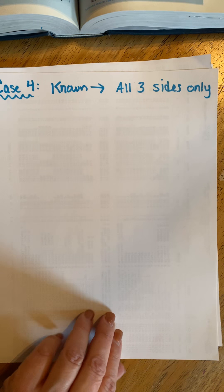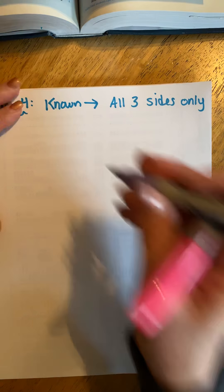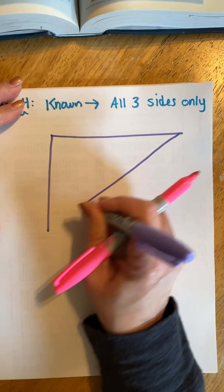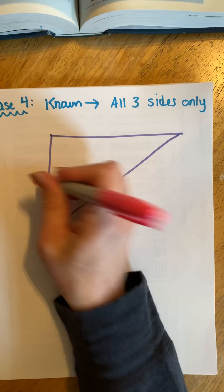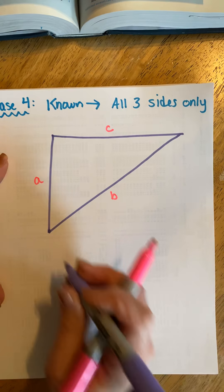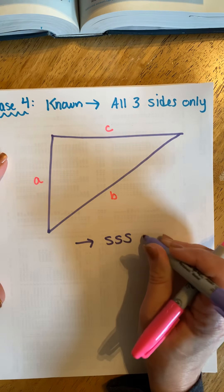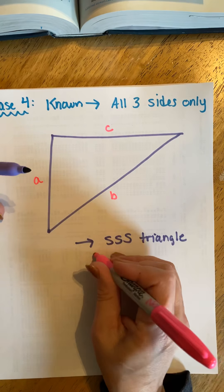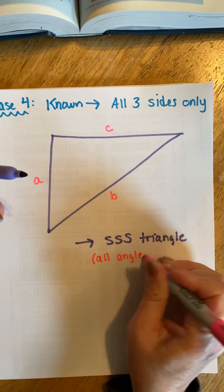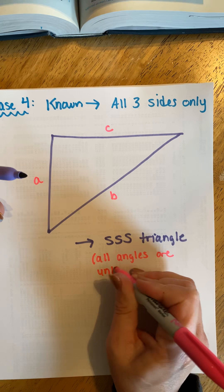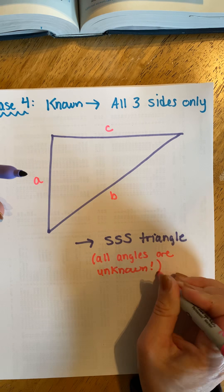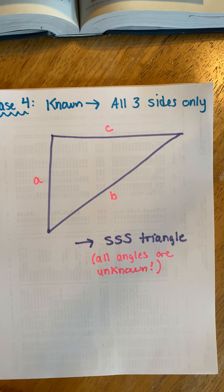Angles and their opposite sides typically share the same letter — one lowercase, one uppercase. Side b is opposite angle B; side c is opposite angle C. We need to know at least three of these six parts, and we have to know the length of at least one side. Because of similar triangles, two triangles can have exactly the same angle measures but completely different side lengths. So if you were only given three angle measures, there would be infinitely many triangles that could satisfy that — we won't look at that scenario.